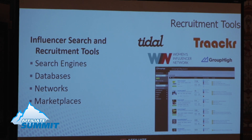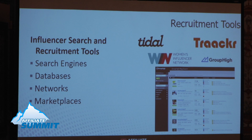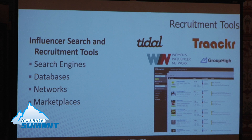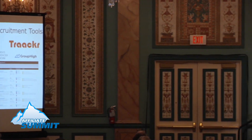The next way to find influencers is through an influencer network. An influencer network is different from a database in that they've already found influencers for you — you're working with a third party that has relationships with their influencers, knows them, and may specialize in a particular niche or vertical. The benefit is it removes a lot of the one-to-one contact you'd otherwise need — you have a single point of contact instead of a thousand. On the other hand, you won't have a direct relationship with your influencers.